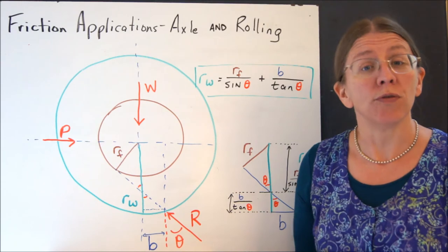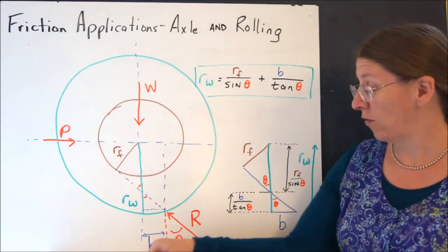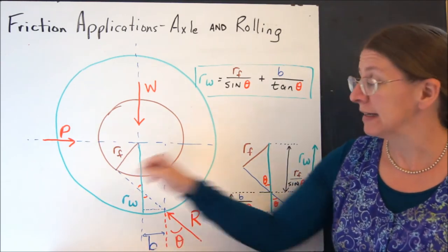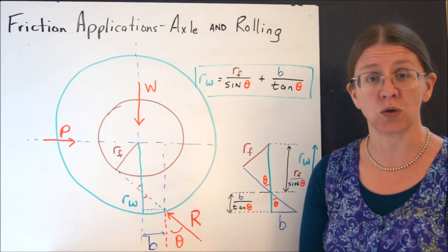Do both. Shift R over by some B, it still acts tangent to the friction circle.